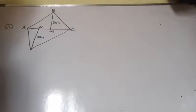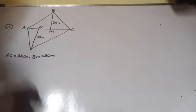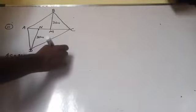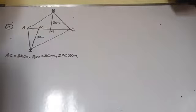Look at question number 11. Find the area of the quadrilateral ABCD. It is given that AC is 22 cm, BM is 3 cm, and DN is also 3 cm. BM is perpendicular to AC and DN is also perpendicular to AC.